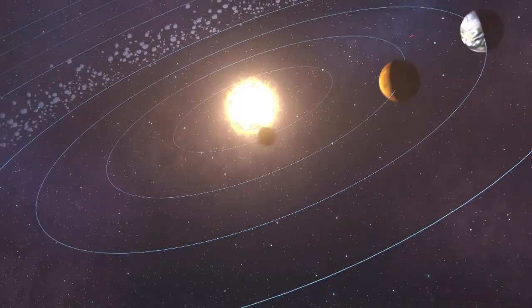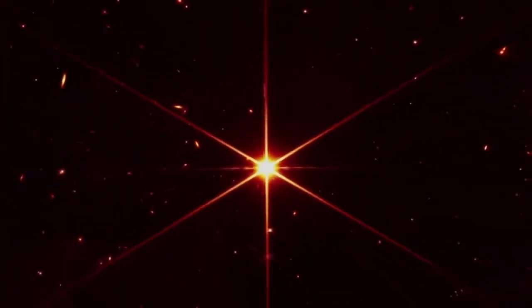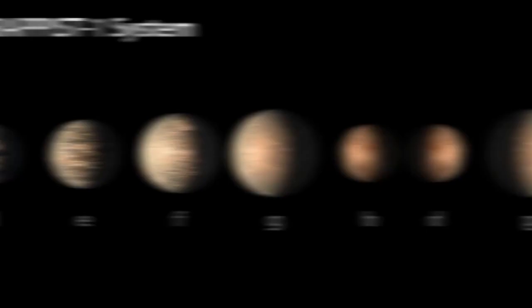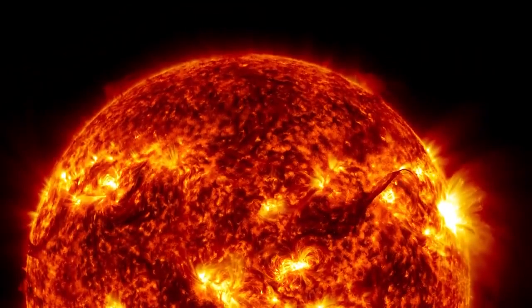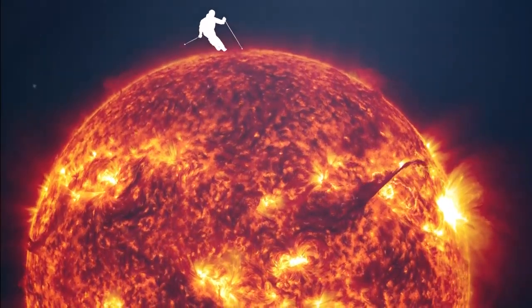NASA has stated that three of these planets are firmly placed within the habitable zone, which is the region around the parent star in which it is most likely that rocky planets will have liquid water on their surfaces. There is a possibility of liquid water existing on the surface of each of the seven planets that are around 235 trillion miles away from our home planet.